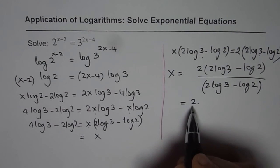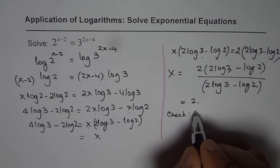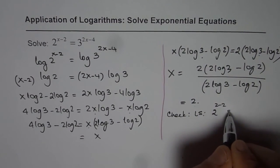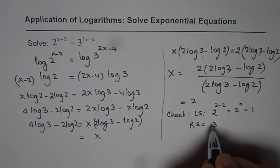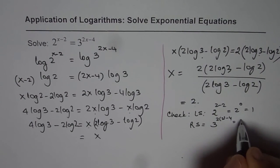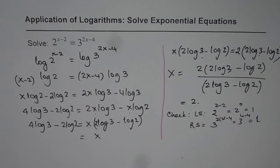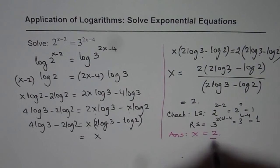So we get an exact answer. You may or may not get an exact answer always. In this case, you should also check if your answer is correct. So on the left side, if you substitute 2, you get 2 to the power of 2 minus 2 which is 2 to the power of 0, that is 1. And on the right side if I substitute 2 for x, I get 3 to the power of 2 times 2 minus 4, which is 3 to the power of 4 minus 4, which is also 1. 3 to the power of 0.